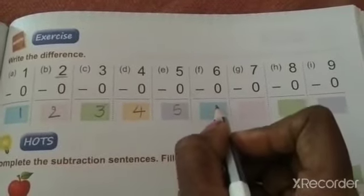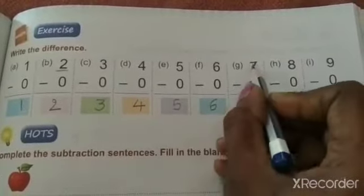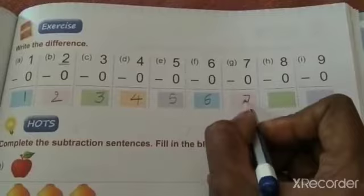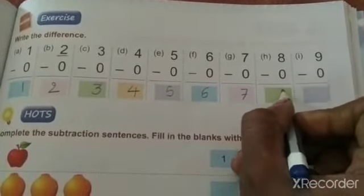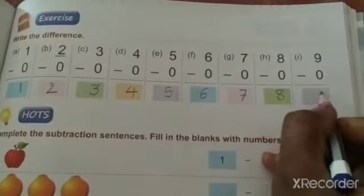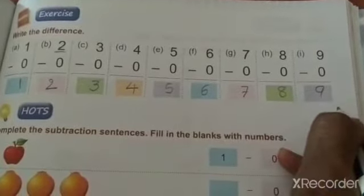6 minus 0, 6. 7 minus 0, 7. And 8 minus 0, 8. And 9 minus 0, 9.